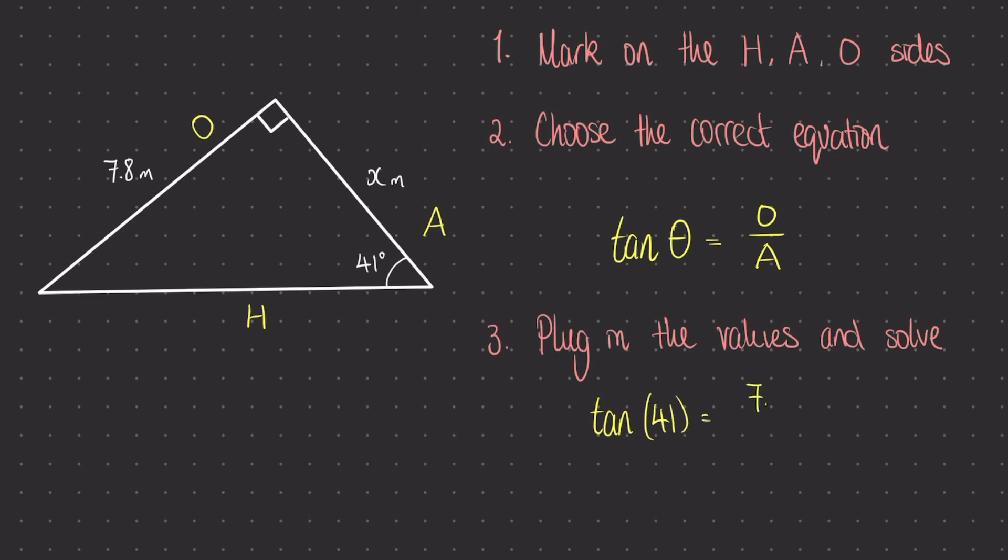In this case we know the angle, so we would get tan of 41 degrees is equal to the opposite side, which is 7.8 divided by our adjacent, which in this case is x.